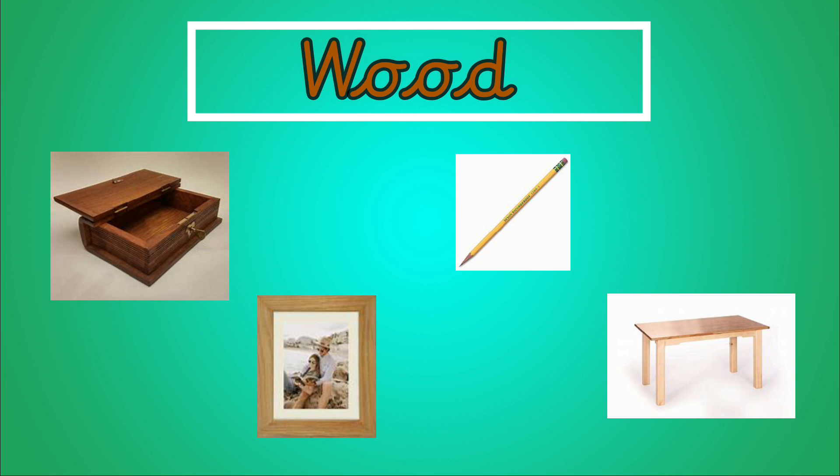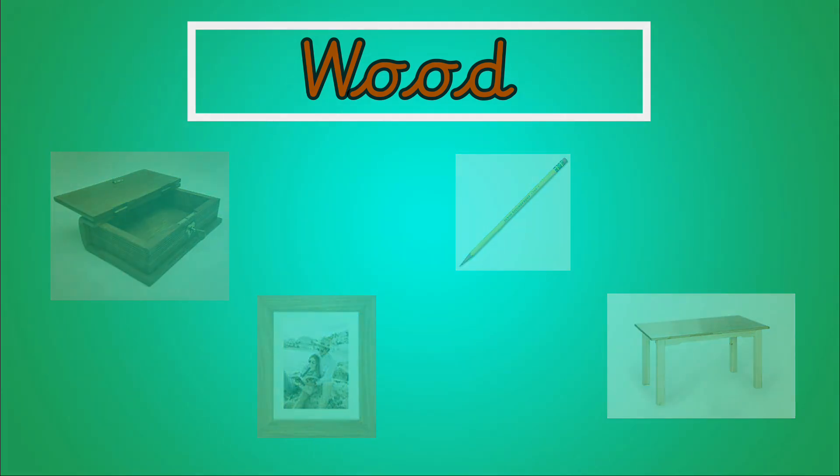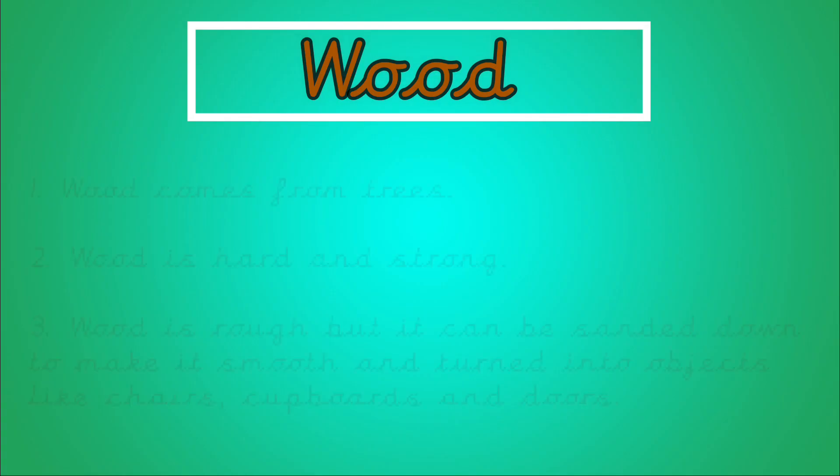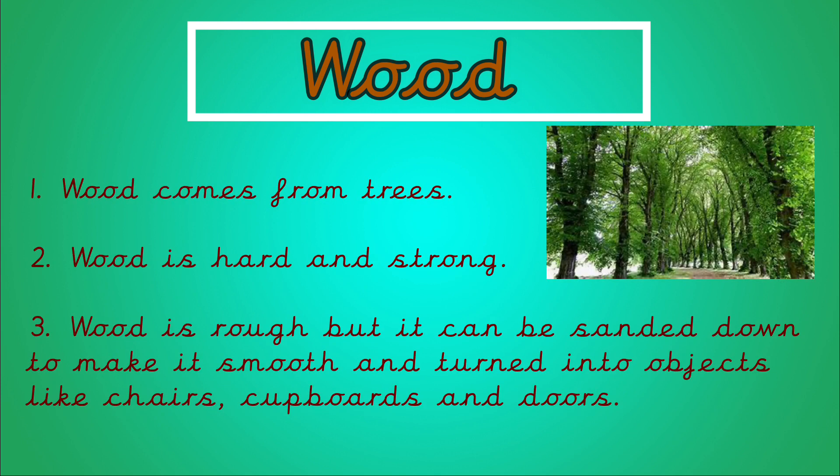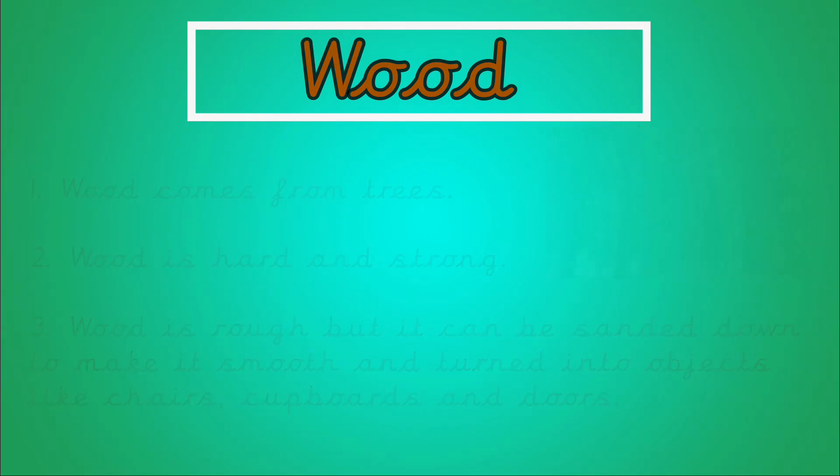Next we're going to look at some of the properties of wood. Wood comes from trees. Wood is hard and strong. Have a look at the piece that you found. Does it feel hard? Wood is rough but it can be sanded down to make it smooth and turned into objects like chairs, cupboards and doors.